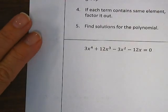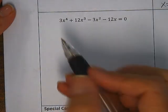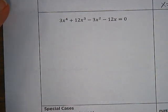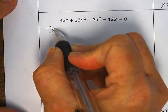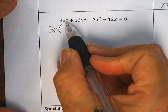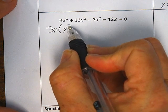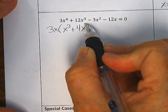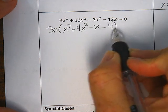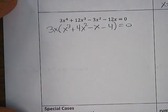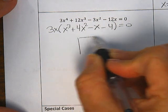Let's go on to the second example. Again, we're going to look for a greatest common factor — that's always what you want to look for. In this case it looks like I have a 3x in every term, so we bring the 3x out to the front. When I factor 3x out of each term, I've got an x cubed plus 4x squared minus x minus 4 equal to zero. I'm going to put the cubic into a box now to factor it.